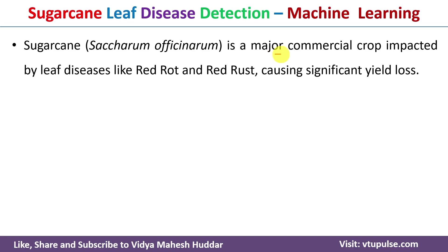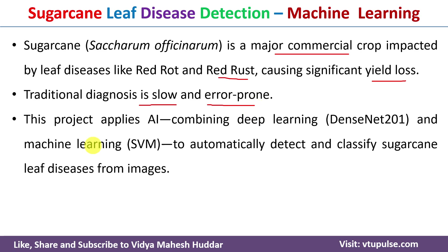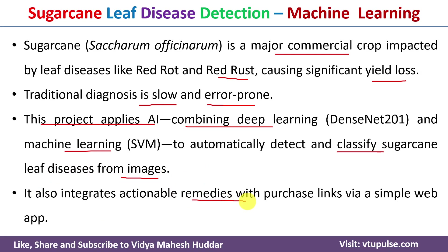Sugarcane is a major commercial crop impacted by leaf diseases like red root and red rust, causing significant yield loss. Solving this problem manually is very slow and error-prone. To overcome this, the project applies AI combining deep learning and machine learning to automatically detect and classify sugarcane leaf diseases from images. It also gives remedies with purchase links via a simple web app.